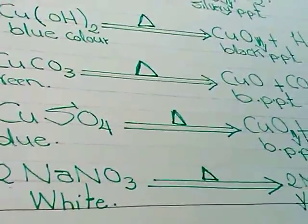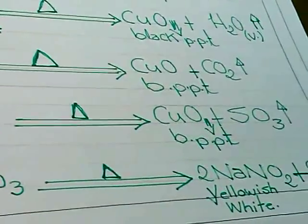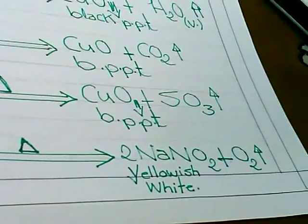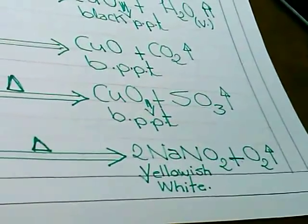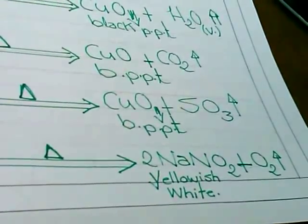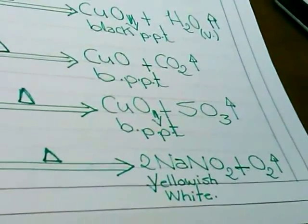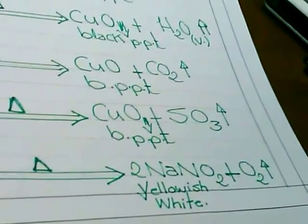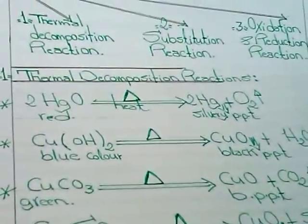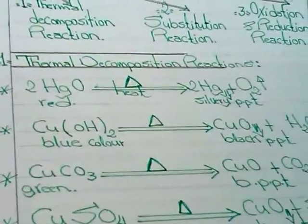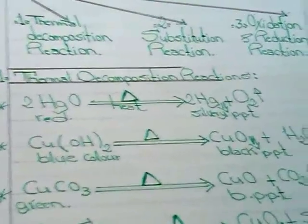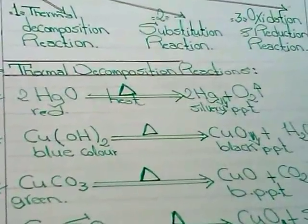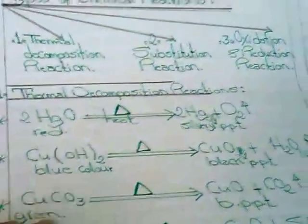NaNO3, white color sodium nitrate, can be decomposed by heat to obtain 2 NaNO2, yellowish white sodium nitrite, and oxygen gas evolves. These equations express the first type of chemical reaction, which is called thermal decomposition reactions.